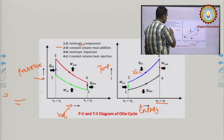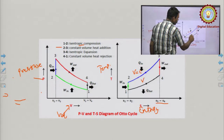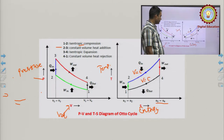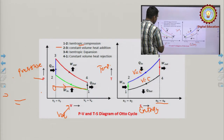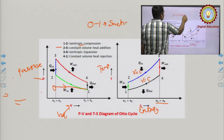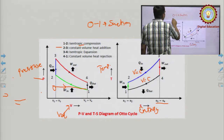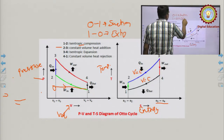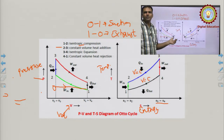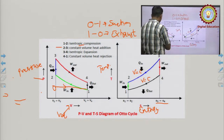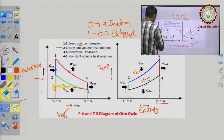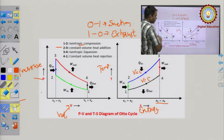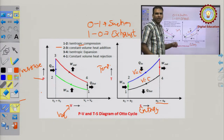S₃ equals S₄ and 4→1 is constant-volume heat rejection. On the PV diagram, 0→1 represents suction (fuel-air mixture entering the cylinder) and 1→0 represents exhaust. Since work done during 0→1 is balanced by work done during 1→0, in the thermal analysis of the Otto cycle we consider only the closed cycle 1→2→3→4→1. The area under the PV diagram gives the net work done.